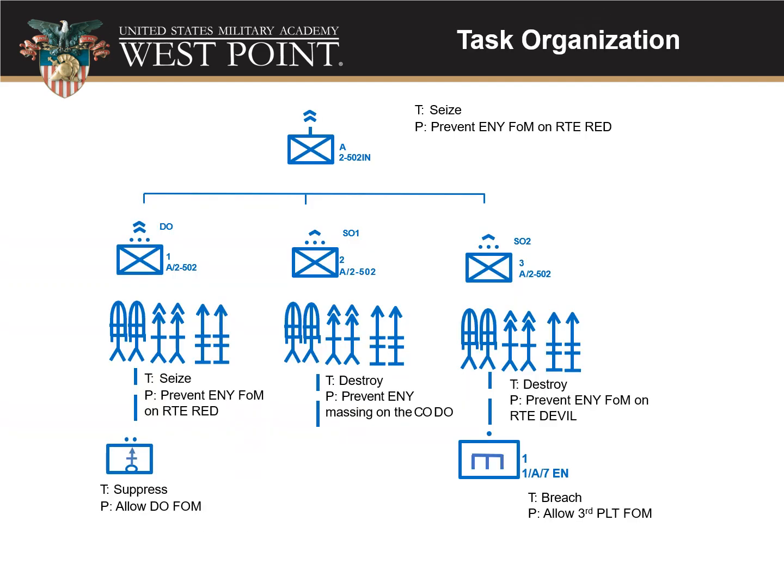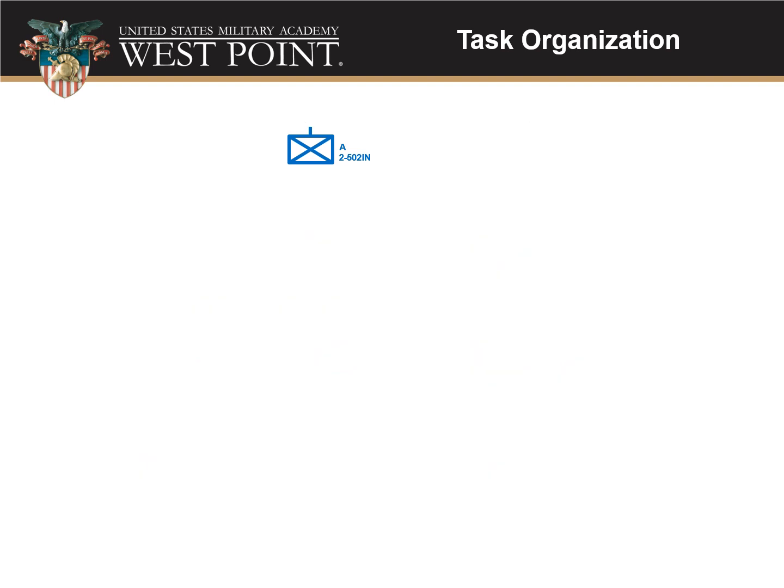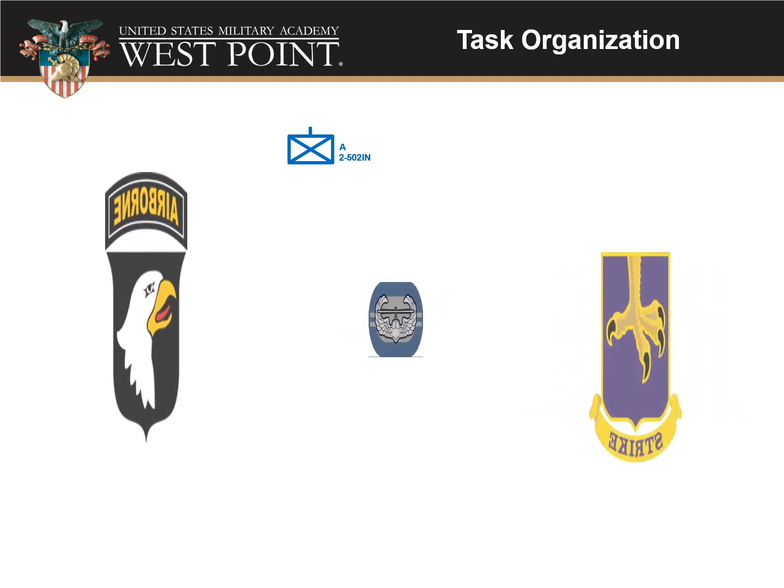Here's an example of a company task org diagrammed as a wire diagram. Let's walk through how to build one of these, because that's what you need to know how to do. First, you put your unit at the top. In this case, we are Alpha Company, 2nd of the 502nd Infantry.